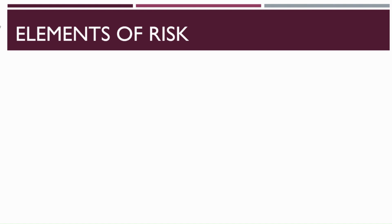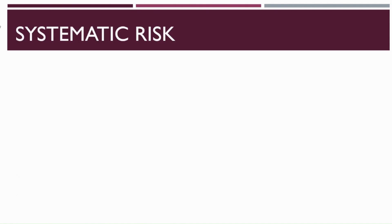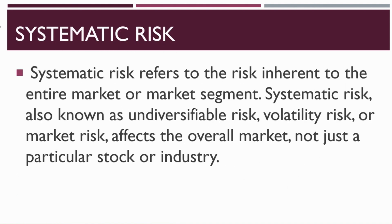Broadly, there are two groups of elements classified as systematic risk and unsystematic risk. Systematic risk refers to the risk inherent to the entire market or market segment. Systematic risk, also known as undiversifiable risk, volatility risk, or market risk, affects the overall market and not just a particular stock or industry.